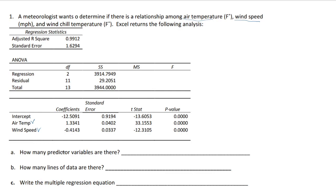So if it is asking how many predictor variables there are, there are two variables used to predict it. So the answer is two for this case.